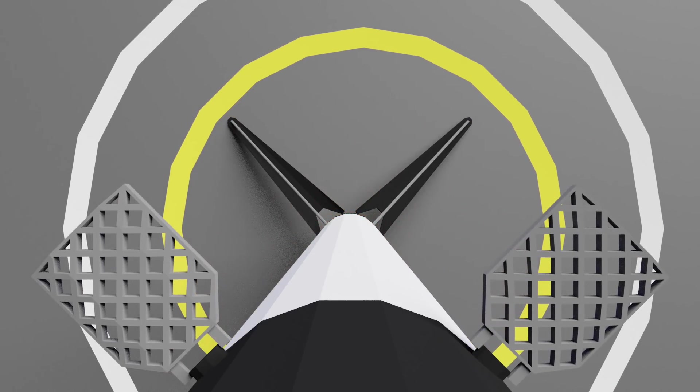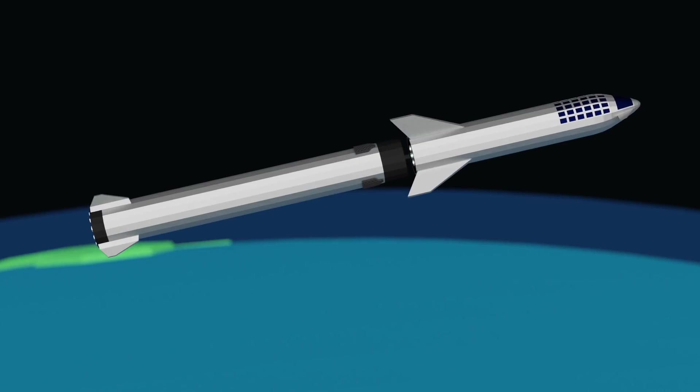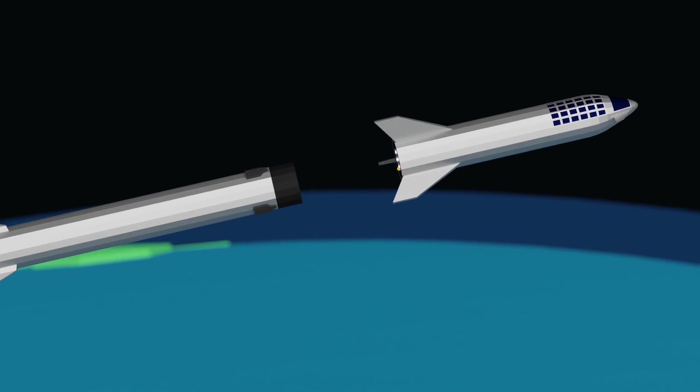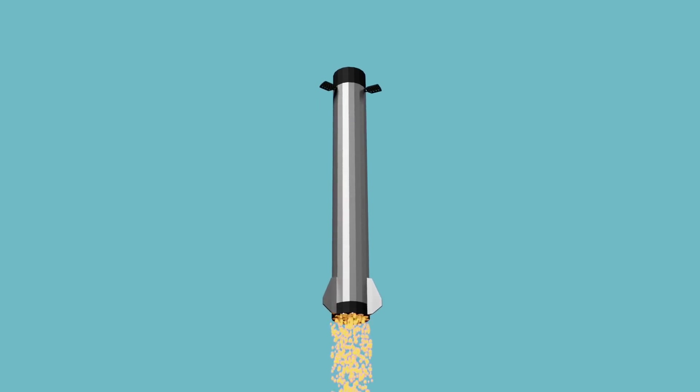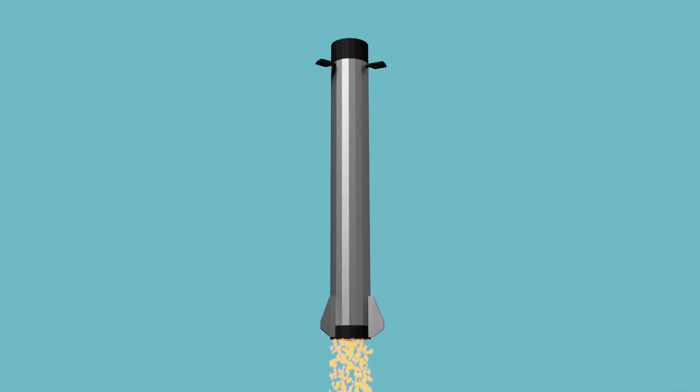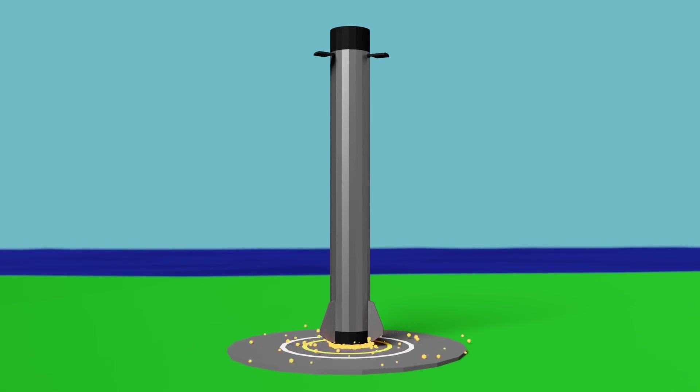A lot of you will be familiar with the fact that SpaceX is developing Starship and Super Heavy. Super Heavy is a first stage booster, and so it lands in a very similar way to the Falcon 9 first stage, using grid fins to make a pinpoint landing.